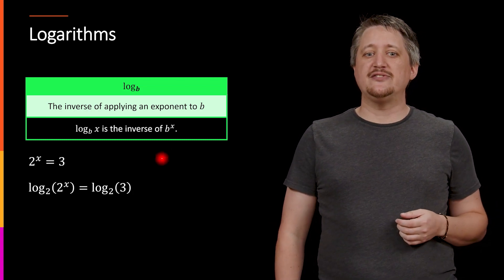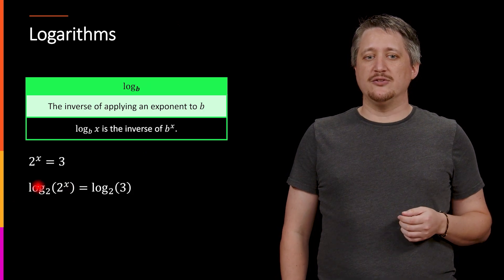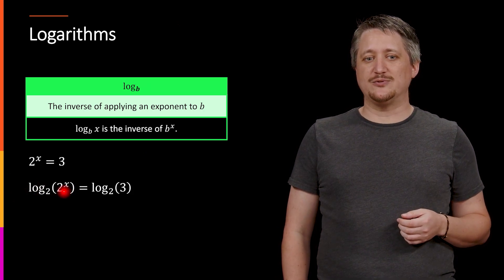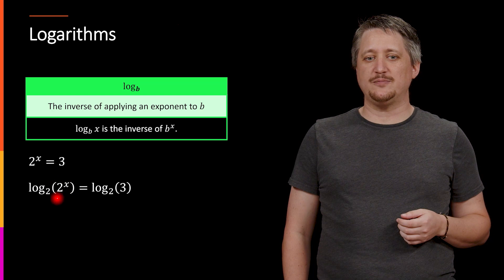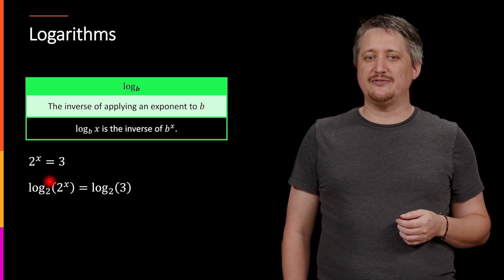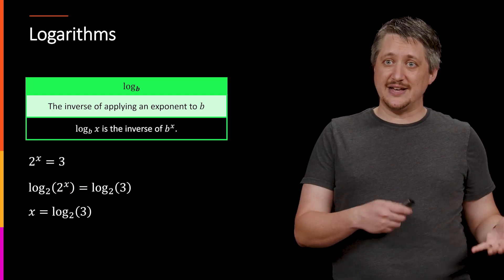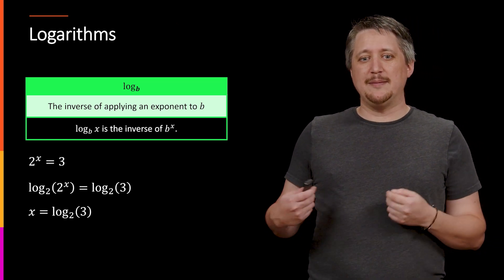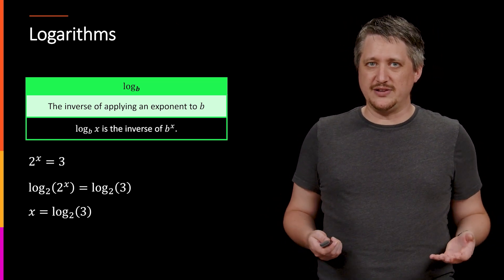So on the left, this log base 2 of 2 to the x, the log base 2 and the 2 as the base sort of undo each other, and the exponent is the only thing left on that side. So I end up with x as my left-hand side, and my right-hand side is just what it is, log base 2 of 3.